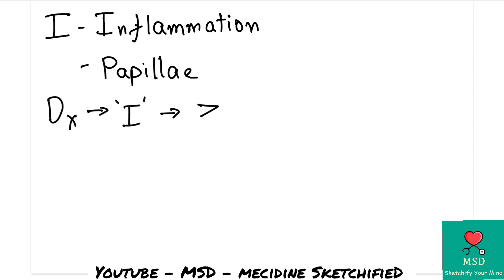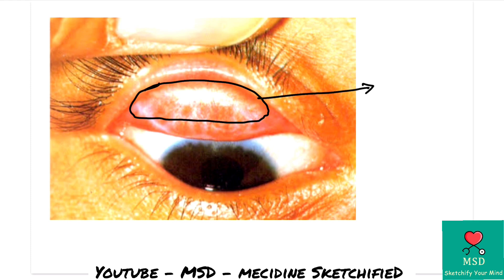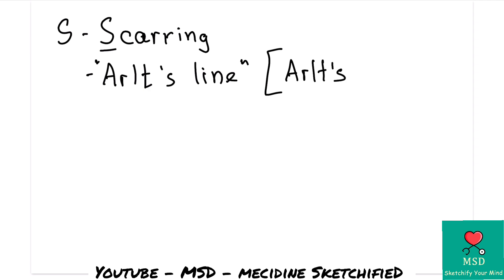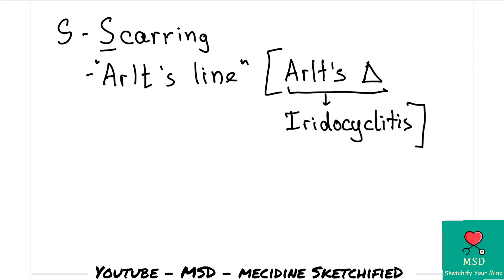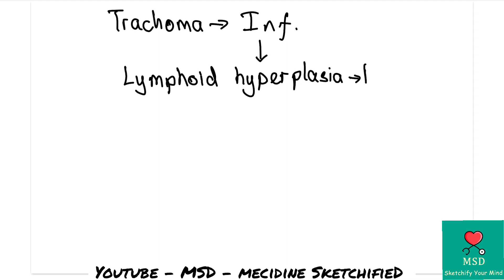In the next stage, you see a whitish band or line in the upper palpebral conjunctiva — this is scarring. After inflammation, scarring occurs. In FISTO staging, S stands for scar. This line is called Arlt's line. There is also another term called Arlt's triangle, which is seen in iridocyclitis.